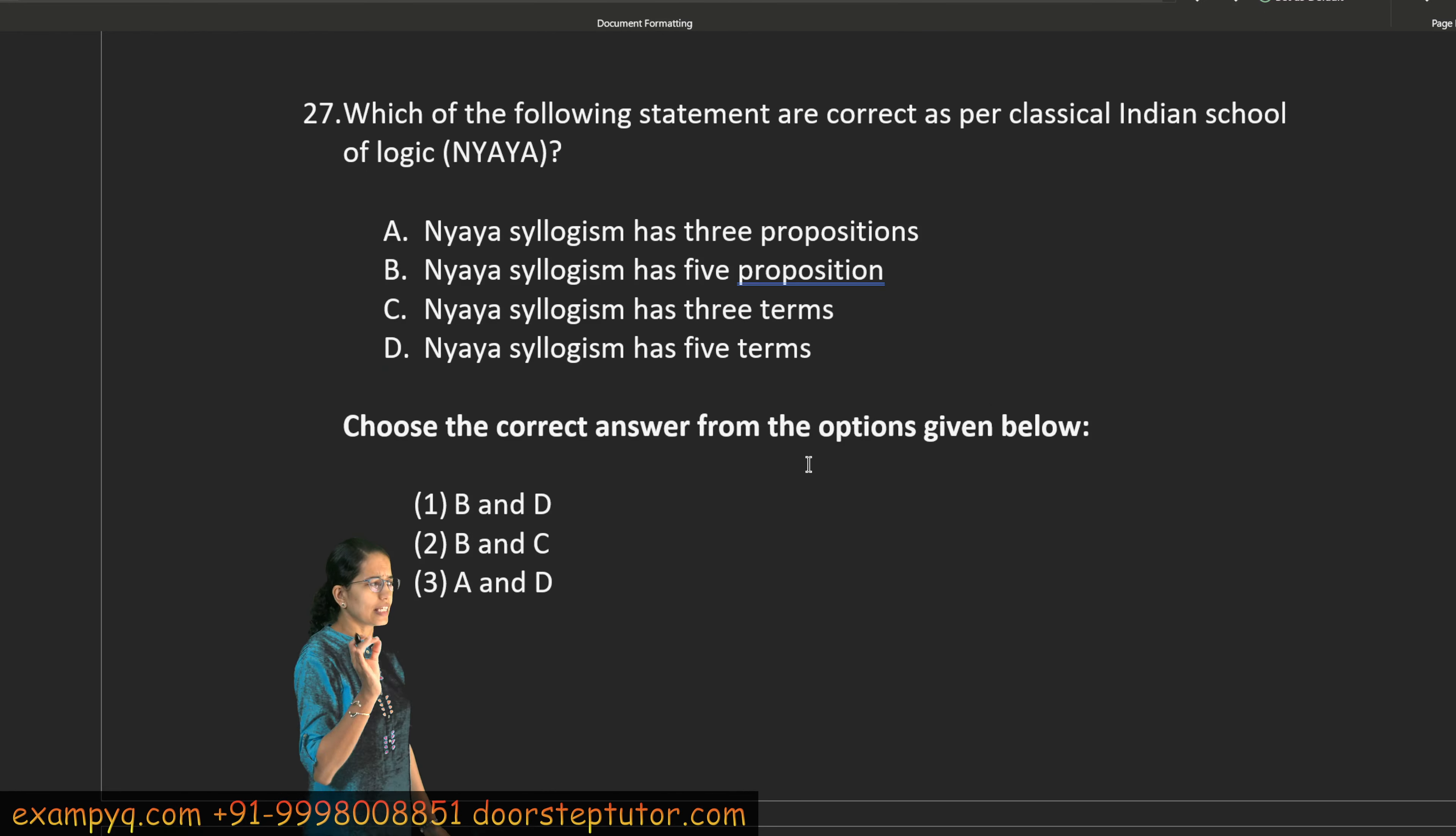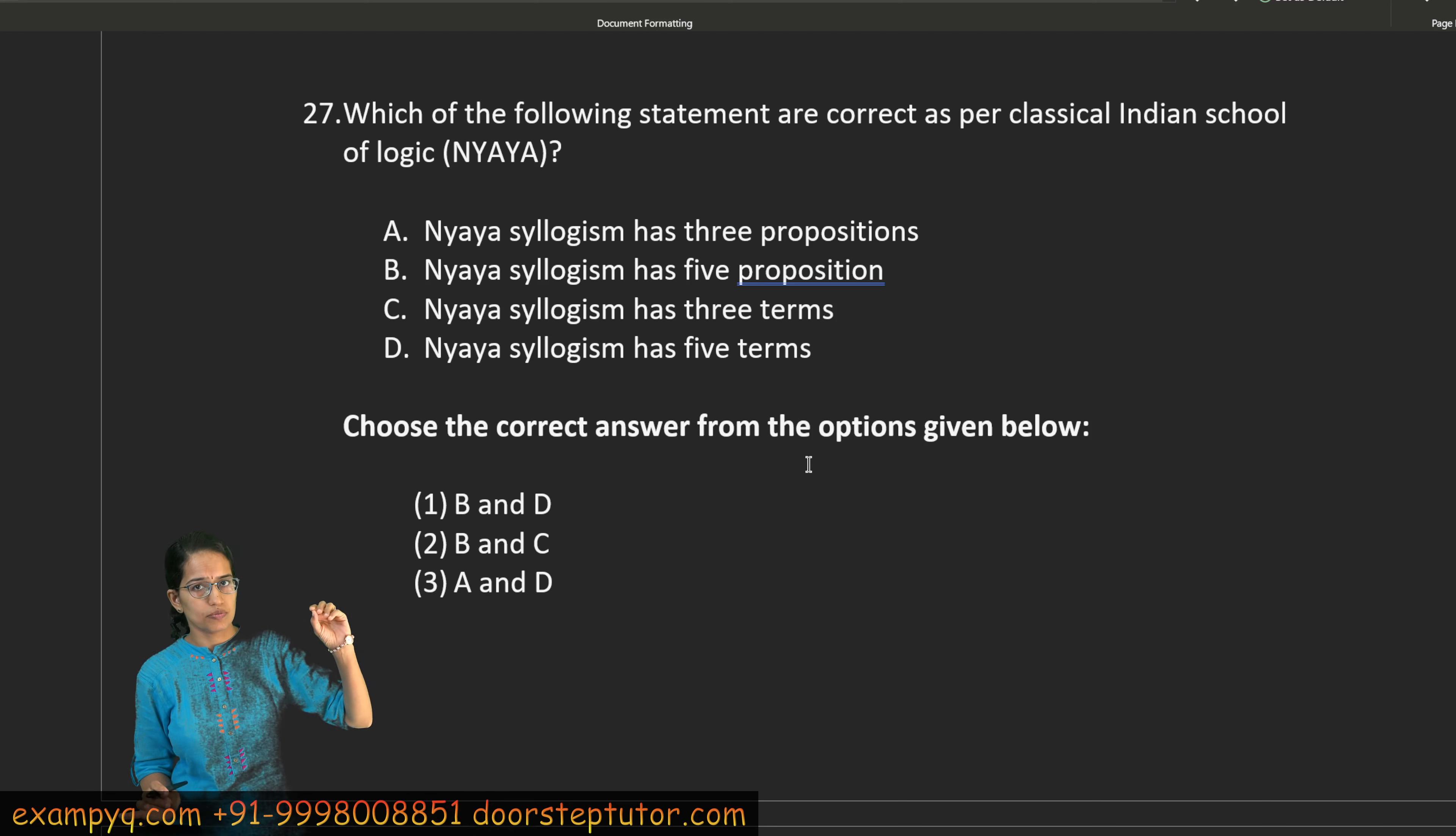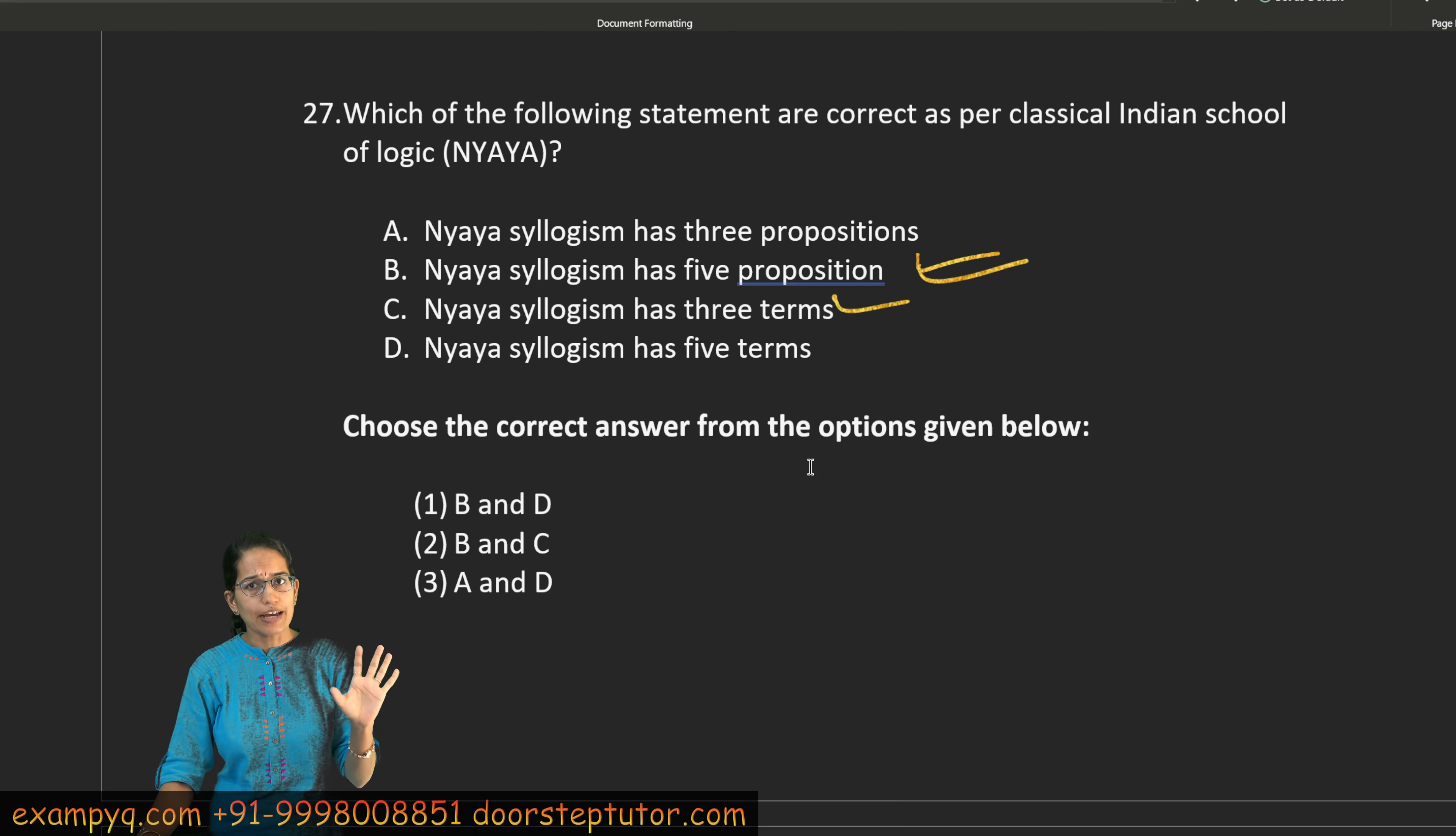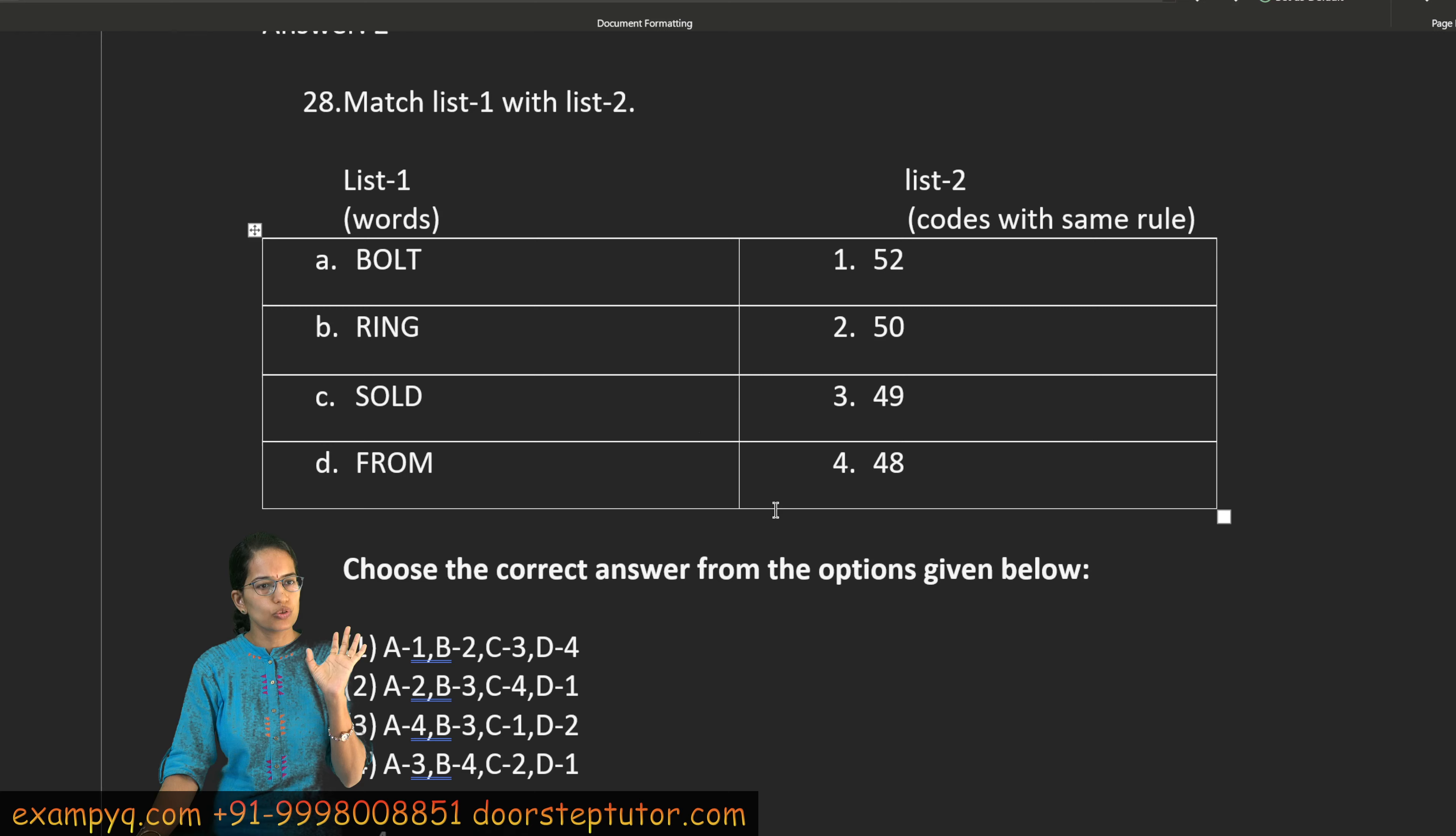The next question, this is a similar question asked in shift 1. The question is that in the Nyaya syllogism, which we know in Indian philosophy, which is the Nyaya syllogism, we take three terms and five propositions. Which three terms are? Paksha, Sadhya and Sadhana. Major, Middle and Minor. So these three terms will be there and five propositions will be. Pratindya, Hetu, Udaharan, Upnaya and Nigman. So these are your five propositions. If you have seen our class on Nyaya philosophy, then you can solve it.